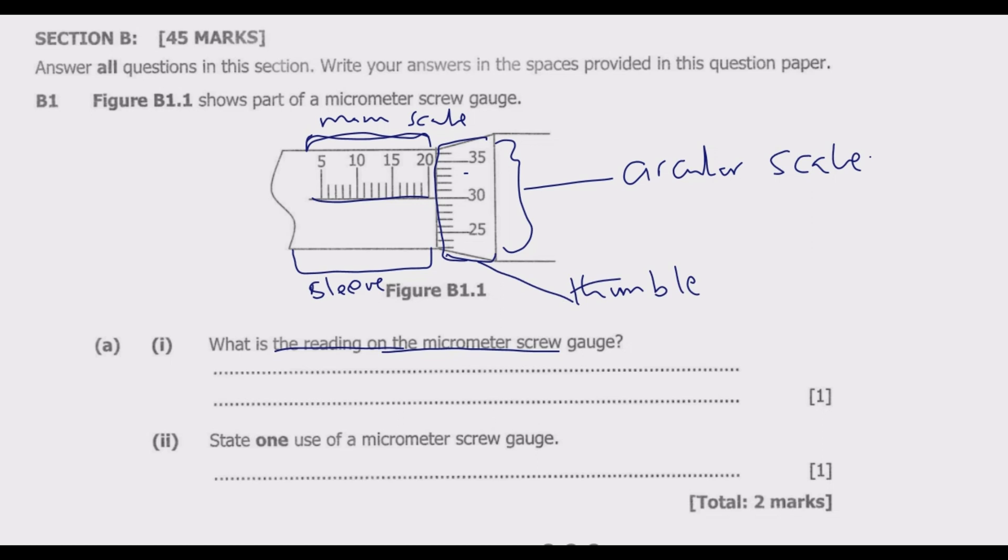When we are getting the reading on the micrometer screw gauge, we need to look for two things: the reading on the main scale. The reading on the main scale is given in millimeters. You look at this last value. This last value is 20, there is nothing after here the marking. So on the main scale, we have 20 millimeter. Now this 20 millimeter is the same as 20.00 millimeter. Take note of that. This is the same, except that we have two zeros after the decimal place.